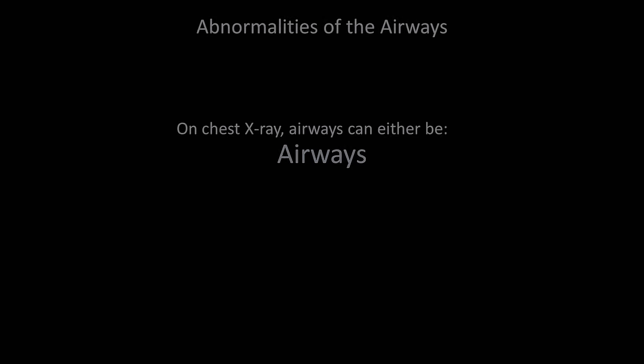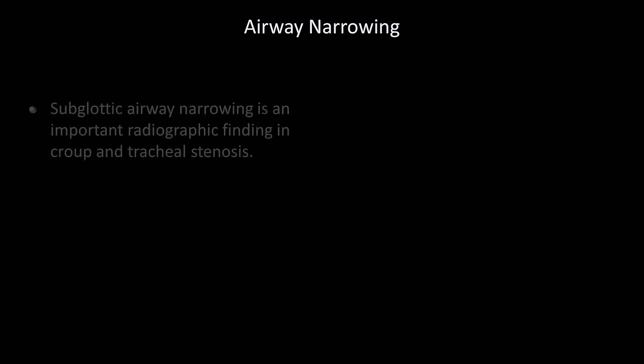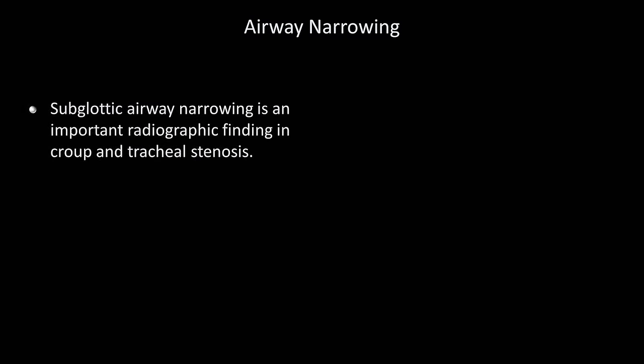Let's start with the airways. On the chest x-ray, the airways can either be narrowed, deviated, or on occasion, contain foreign objects. There isn't much to say about airway narrowing other than the fact that subglottic airway narrowing is an important radiographic finding in croup and tracheal stenosis.